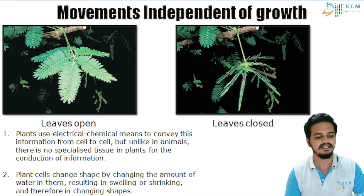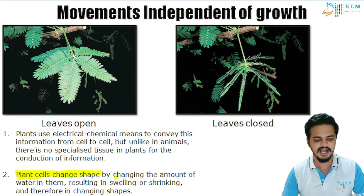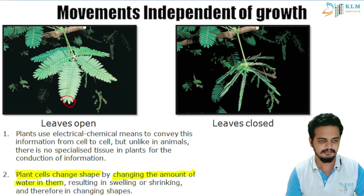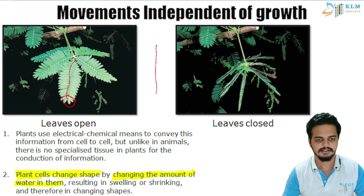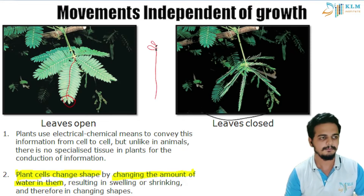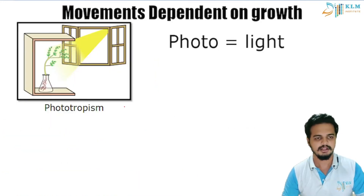Plant cells change their shape by changing the amount of water in them. Imagine you touch the plant — somewhere at the tip. What is connected to the midrib? The midrib connects here, and here will be the leaf. The water in this connection can be lost or gained to change the shape of the plant cells. That is how the leaves close.